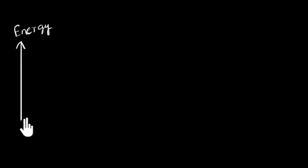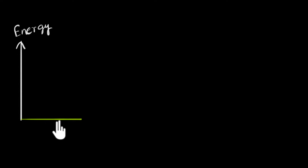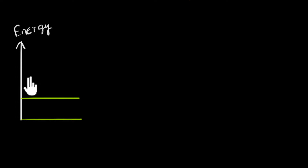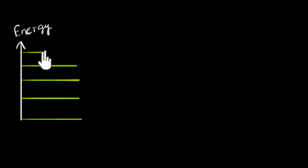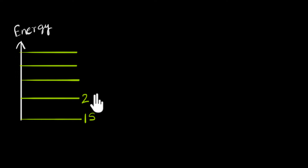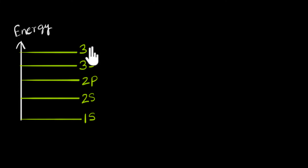Maybe the lowest energy an electron can have is somewhere here, the next higher somewhere here, and so on. We give names to these energy levels: the lowest one is the 1s energy level, the next higher is 2s, then 2p, then 3s and 3p, and so on and so forth.